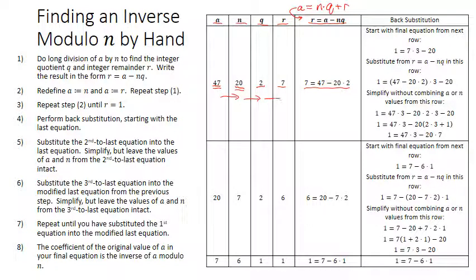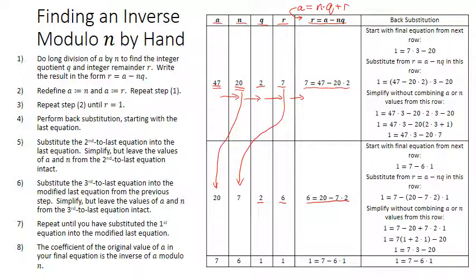Don't worry about the last column for the moment. On the next row you redefine a to be the previous value of n, and n to be the previous value of r. So you calculate the quotient of 20 divided by 7 — 7 goes in twice — leaving remainder 6. Then write r = a − n·q again. You continue shifting: move n down to the new a, old r becomes new n, and repeat across the bottom row.